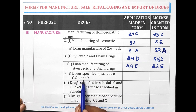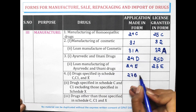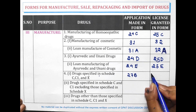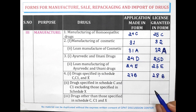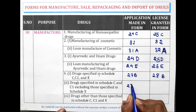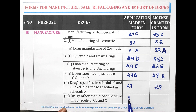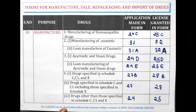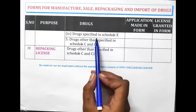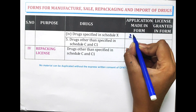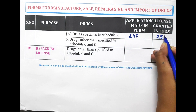For drugs specified in Schedule C, C1 and X, for manufacturing, Form 27B is filled and the license is granted in Form 28B. For manufacturing of drugs specified in Schedule C and C1, excluding those in Schedule X, the application is made in Form 27 and the license is granted in Form 28. For manufacturing of drugs other than those specified in Schedule C, C1 and X, the application is made in Form 24F and the license is granted in Form 25F. For manufacturing of drugs specified in Schedule X, the application is made in Form 24F and the license is granted in Form 25F.